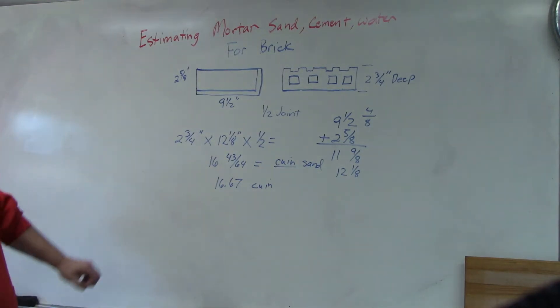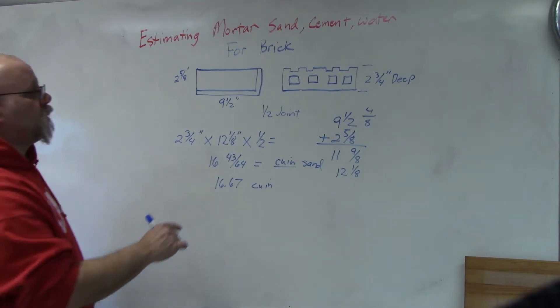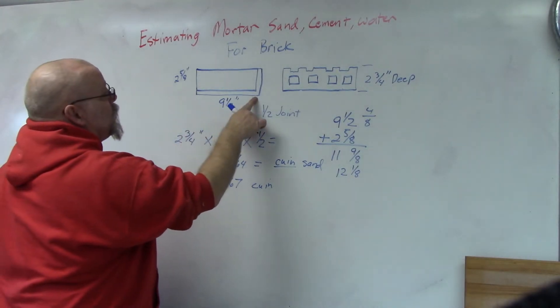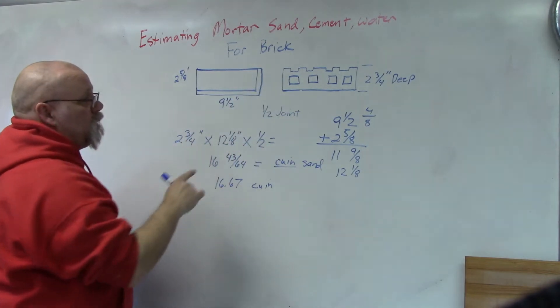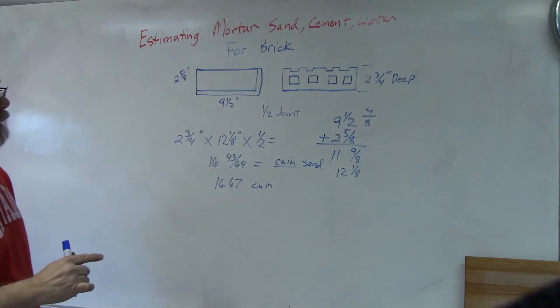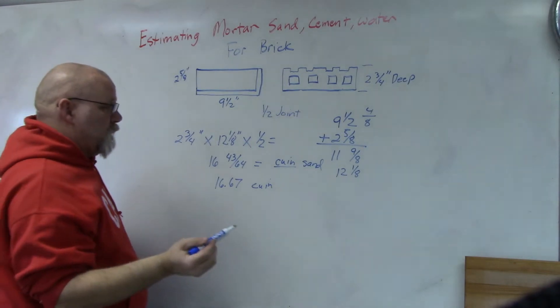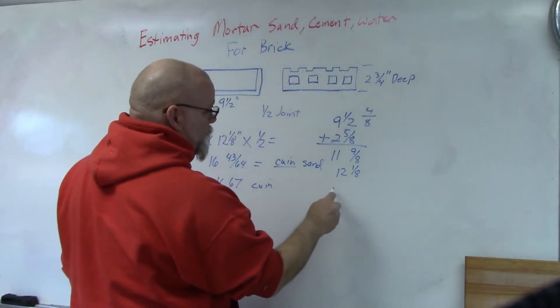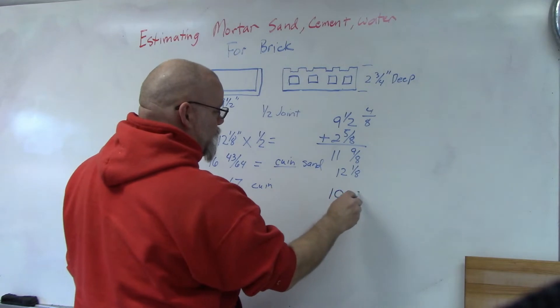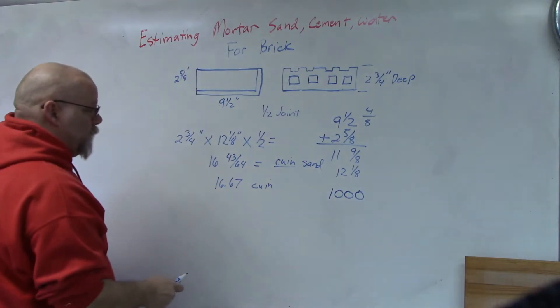So I need 16.67 cubic inches of mortar to cover, to do the bed joint and the head joint on each brick. So now what I need to know is how many brick I'm going to lay. Let's say I'm doing a project and I have, let's give a round number, let's say a thousand brick to lay.